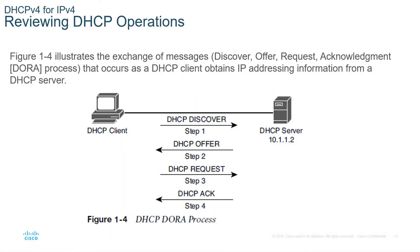Reviewing the DHCP operations — there are four steps. The figure illustrates the exchange of messages: Discover, Offer, Request, and Acknowledgement, which we call the DORA process. This occurs as the client obtains an IP address from the server. Step one: when a DHCP client initially boots, it has no IP address, no default gateway, or other configuration information. The client communicates by sending a broadcast DHCP Discover message to destination IP address 255.255.255.255 and destination MAC address all F's, attempting to discover a DHCP server. The source IP is quad zero and the source MAC is the MAC address of the sending device.